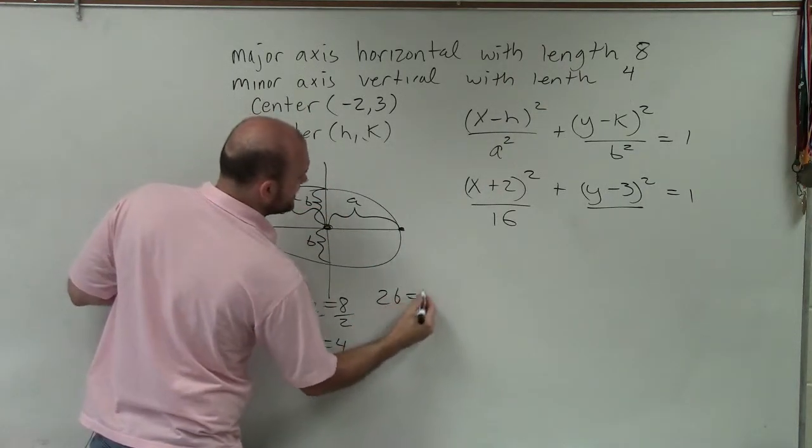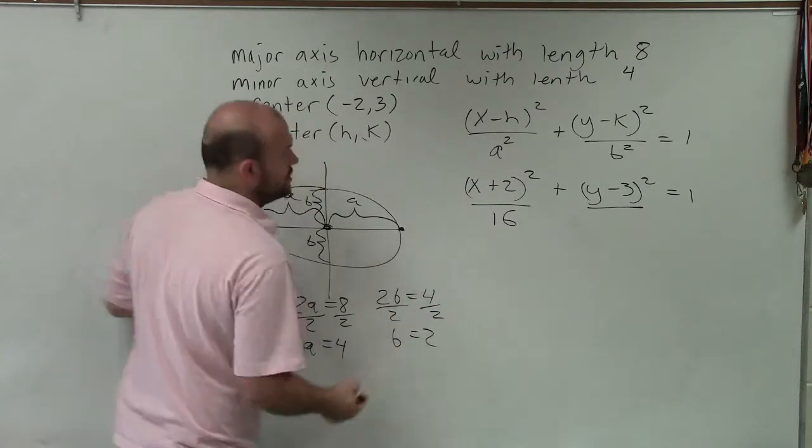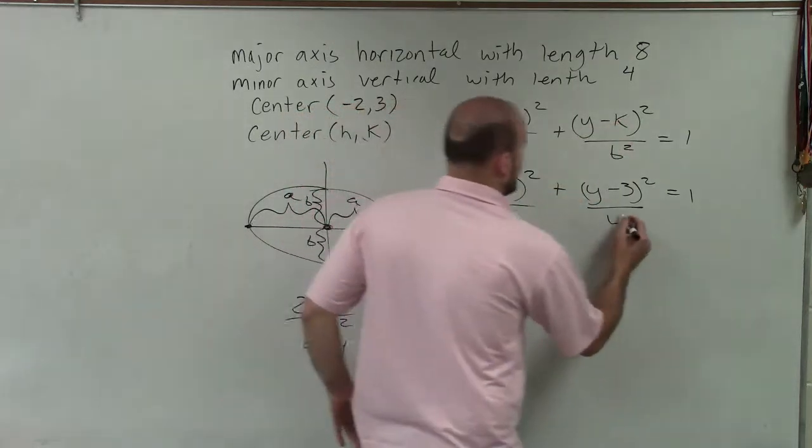so I can say 2b is equal to 4, divide by 2, divide by 2, b equals 2. And again, 2 squared will equal 4.